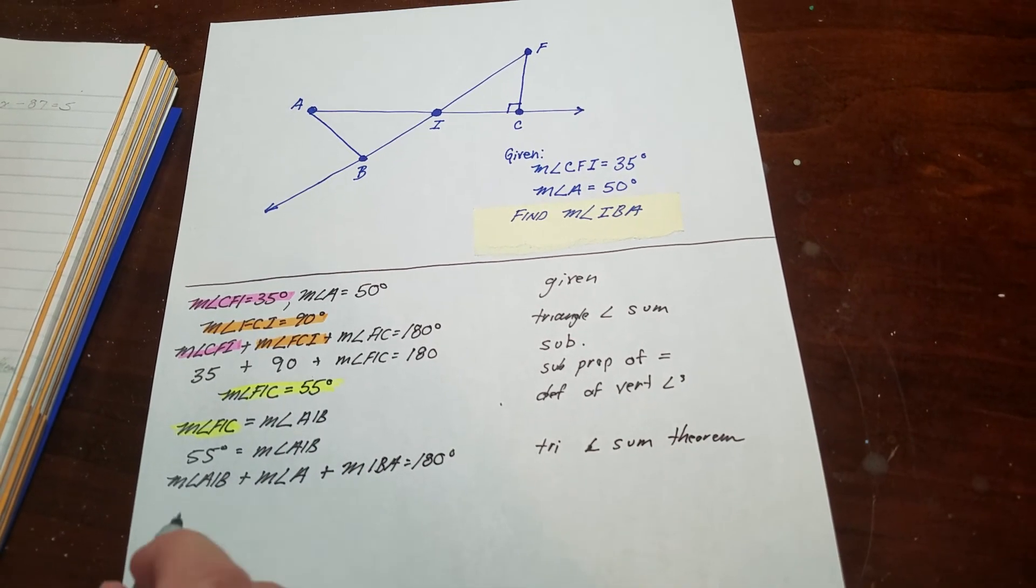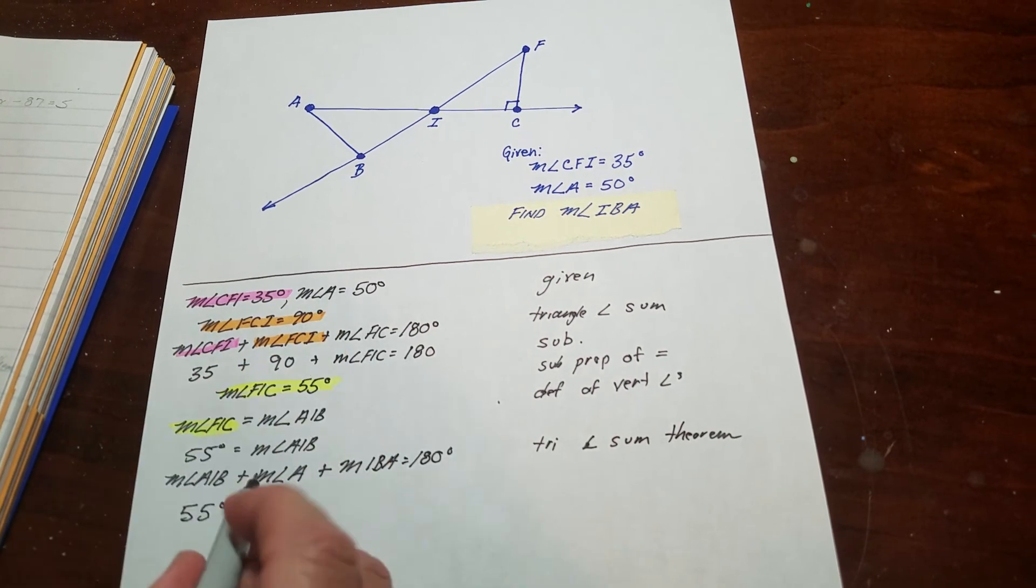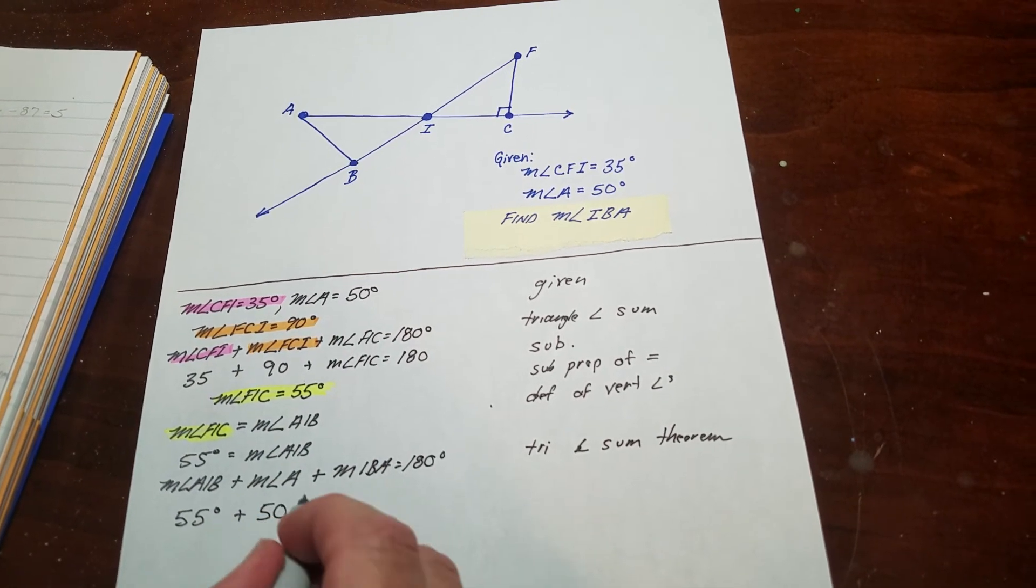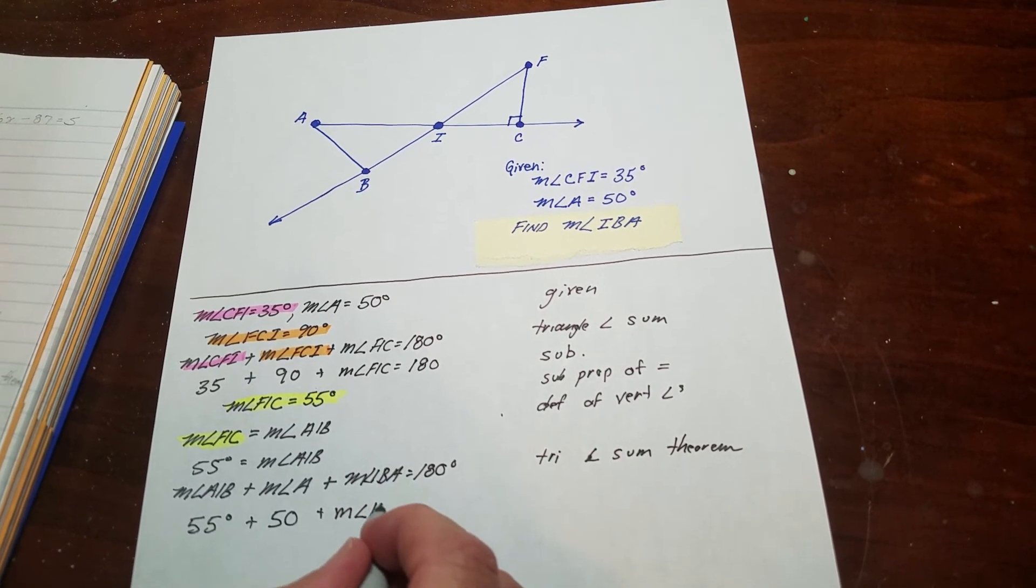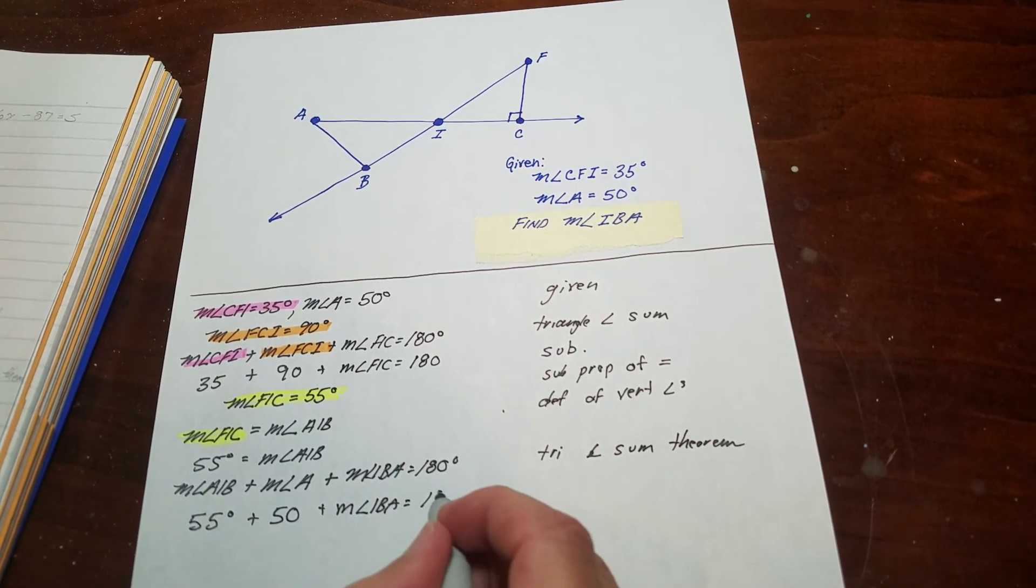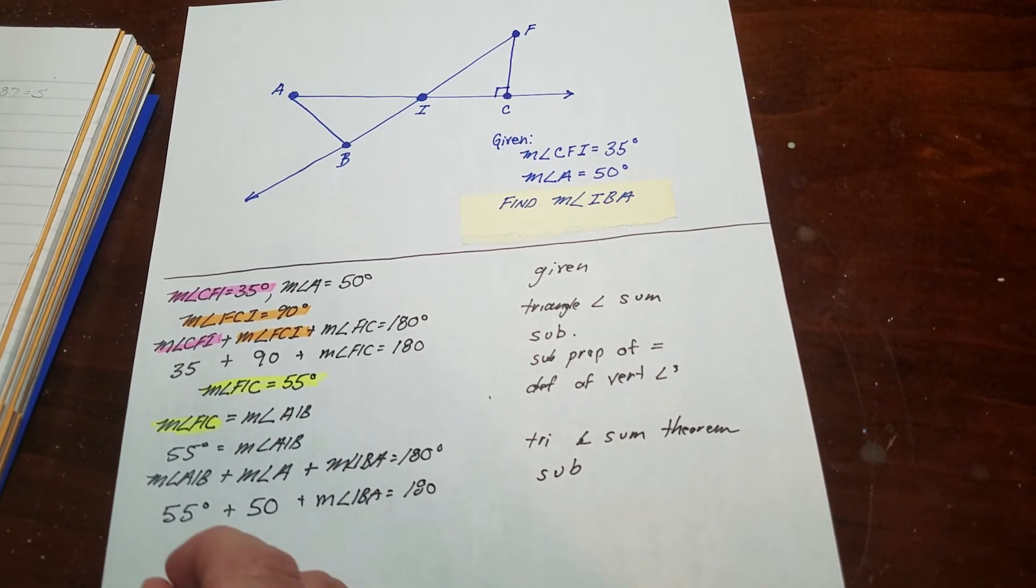I'm going to substitute. I know AIB is 55 and angle A is 50. I'm trying to figure out IBA. That's just substitution.